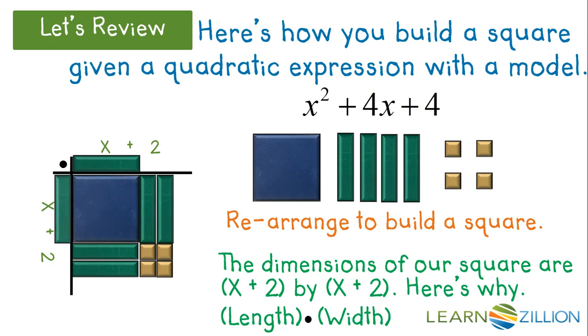So, x times x is x squared. 2 times x is 2x. 2 times x is 2x, and 2 times 2 is 4.